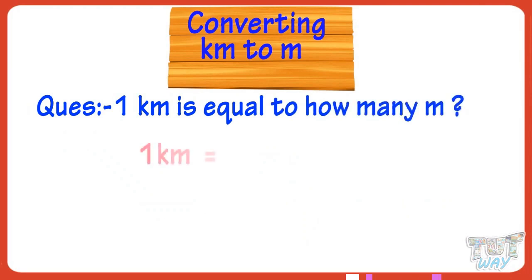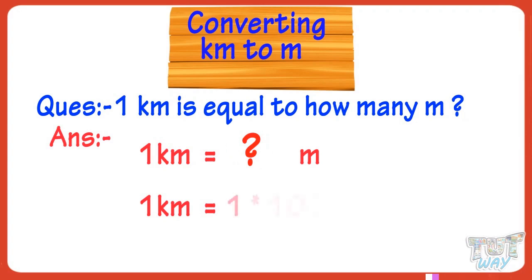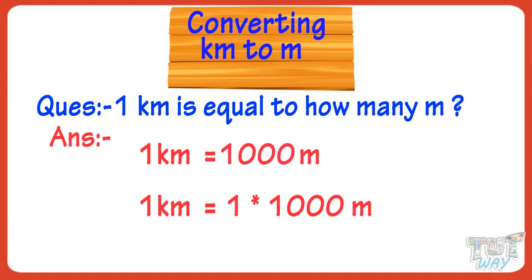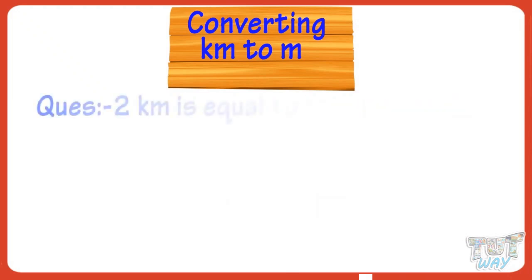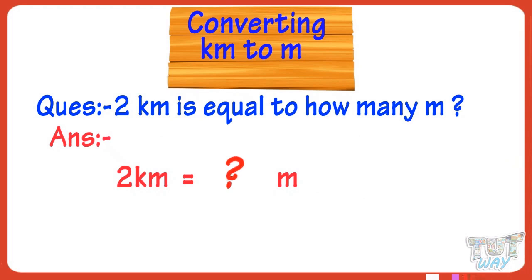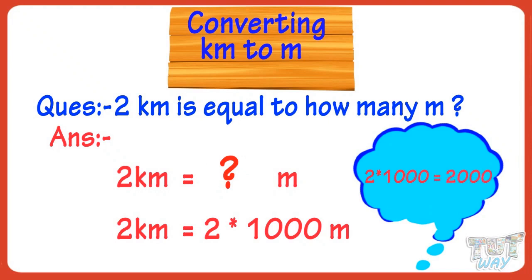Now let's learn converting kilometers to meters. 1 kilometer is equal to how many meters? 1 kilometer equals 1 multiplied by 1,000 meters — that is, we multiply by 1,000. So 1 kilometer equals 1,000 meters. 2 kilometers equals how many meters? Multiplying 2 by 1,000, we get 2,000. So 2 kilometers equals 2,000 meters.